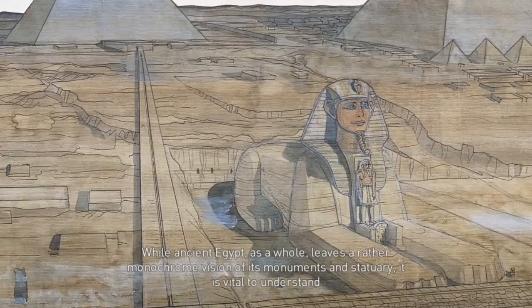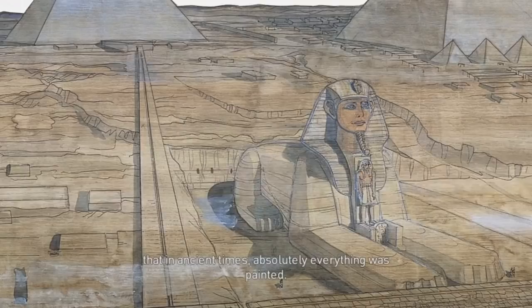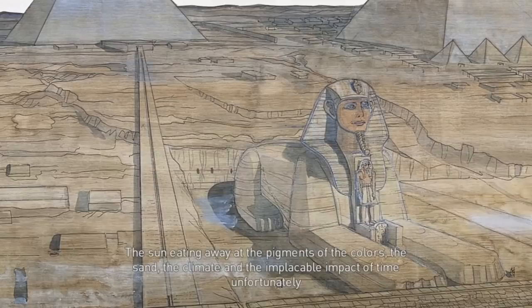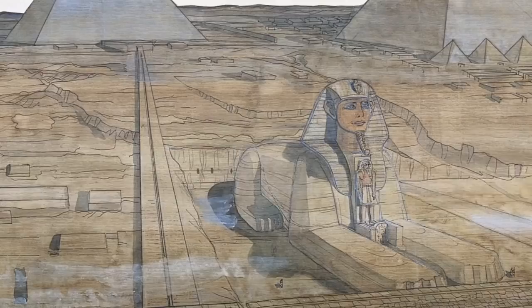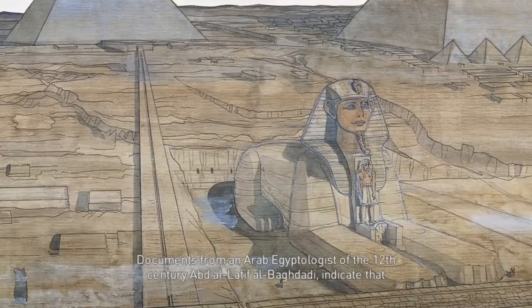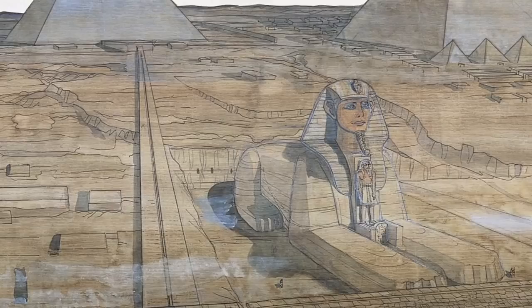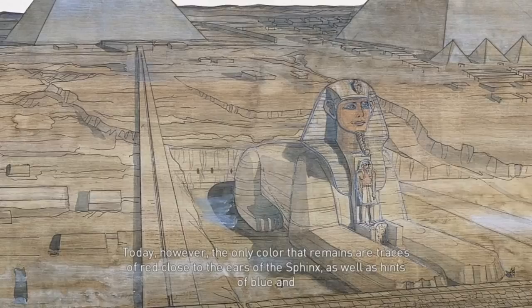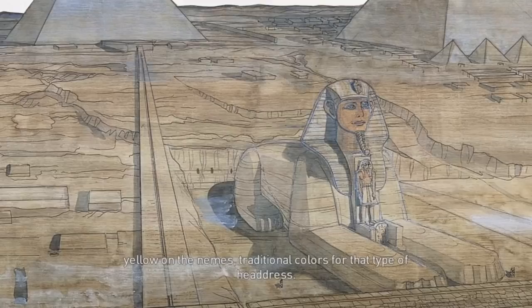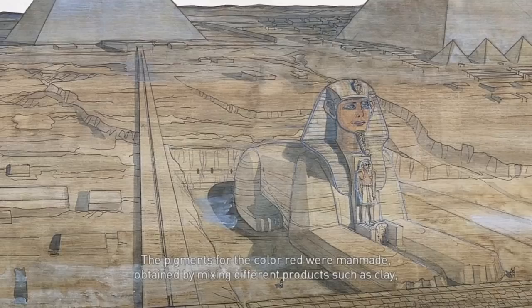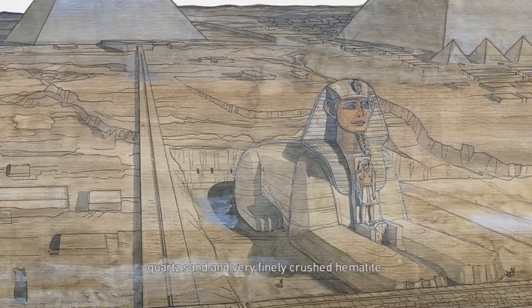While ancient Egypt as a whole leaves a rather monochrome vision of its monuments and statuary, it is vital to understand that in ancient times absolutely everything was painted. The sun, the sand, the climate, and the implacable impact of time unfortunately destroyed the glorious colors of the Sphinx of Giza. Documents from an Arab Egyptologist of the 12th century, Abd al-Latif al-Baghdadi, indicate that traces of red were still visible in his time. Today, the only color that remains are traces of red close to the ears of the sphinx, as well as hints of blue and yellow on the nemes. The pigments for the color red were man-made, obtained by mixing different products such as clay, quartz sand, and very finely crushed hematite.